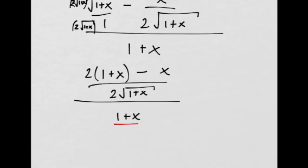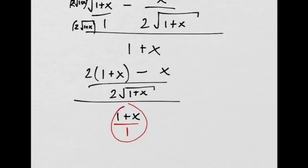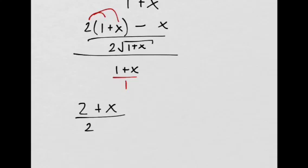Next, I would make this into a fraction. Now, I have a fraction of fractions. I'll flip the second one and multiply. So, this will flip over and I'll multiply by this one. I'm also going to distribute the two and then combine like terms. So, I'll have 2 plus 2X minus X. That just gives me 2 plus X over 2 times the square root of 1 plus X.